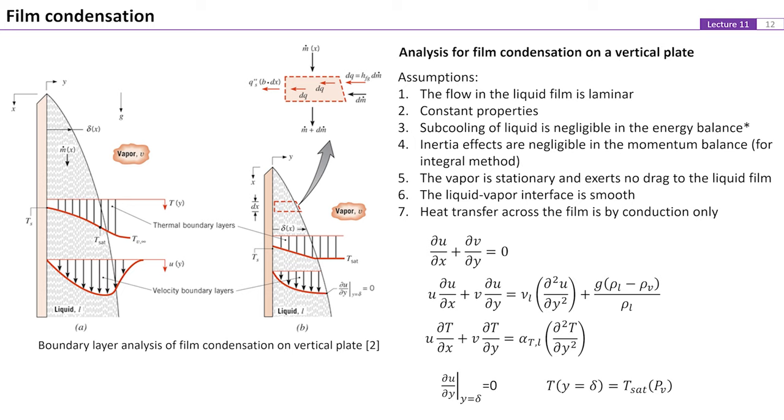For filmwise condensation, theoretical solutions could be derived by applying a boundary layer analysis. For instance, considering a solid plate placed vertically in a saturated vapor environment, the temperature of the plate surface is maintained as subcooled with respect to the vapor. Further assumptions include: the flow in the liquid film is laminar, constant properties of fluids, subcooling of liquid is negligible in the energy balance, inertia effects are negligible in the momentum balance, the vapor is stationary and exerts no drag to the liquid film, the liquid vapor interface is smooth, and heat transfer across the film is by conduction only.